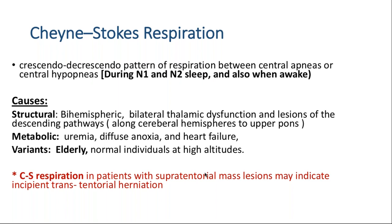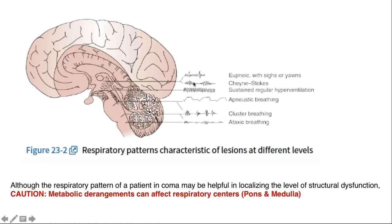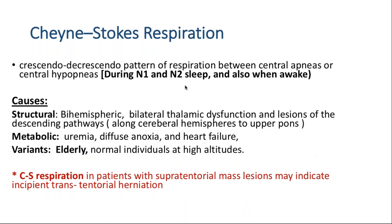Cheyne-Stokes breathing is a well-known respiratory pattern in patients with altered consciousness, characterized by a crescendo-decrescendo pattern — breaths that are shallow, become deeper, then exhale in the same manner, followed by an apneic or hypopneic episode. It can happen because of bihemispheric or bithalamic dysfunction, metabolic conditions like uremia, anoxia, or heart failure, and can also be a normal variance in patients living at high altitudes. It can also occur as a sequela of transtentorial herniation as part of Cushing's triad.